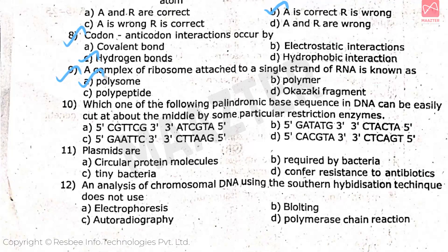Question number 10: which one of the following palindromic base sequence in DNA can be easily cut at about the middle by some particular restriction enzymes — the correct answer is option C. Question number 11: task myths are — the correct answer is option C.